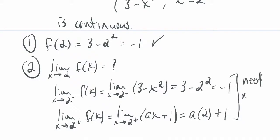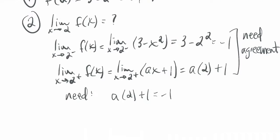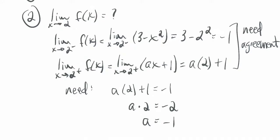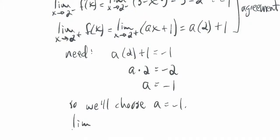Now, we need agreement in order to have continuity. So we need for a times 2 plus 1 to equal negative 1. So I'm going to solve for a. I'll subtract 1 on both sides. So I get a times 2 equals negative 2. And I'll divide by 2 on both sides, get a equals negative 1. So I found the value of a, which creates agreement. So now we can say, so we'll choose a equals negative 1. That's the parameter we're going to go with.